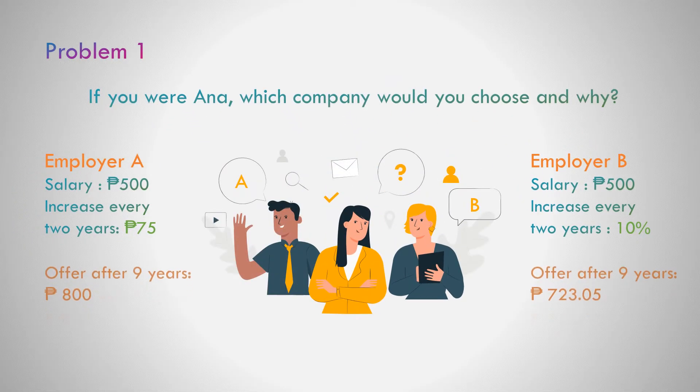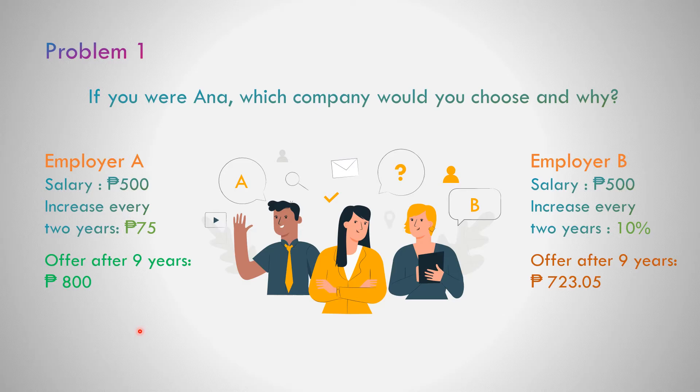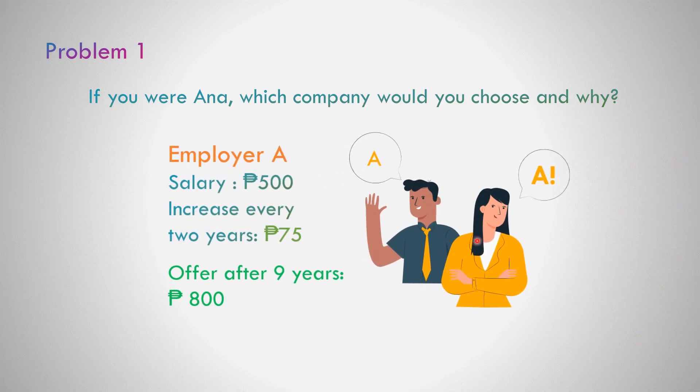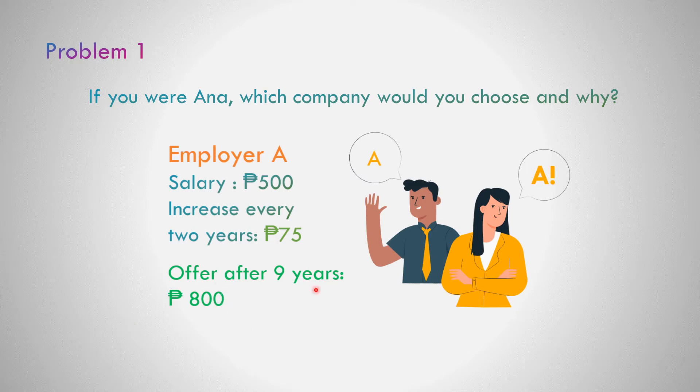If you were Ana, which company would you choose and why? Employer A that offers 800 pesos after nine years or Employer B that offers 723.05 after nine years? Obviously, you will choose Employer A that offers 800 pesos after nine years.